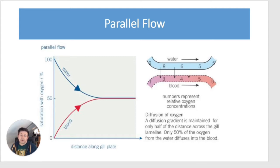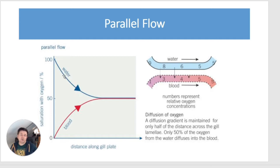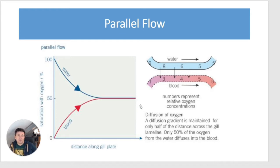Oxygen exchange from the water into the blood does not happen by parallel flow. In a parallel flow, water and blood move in the same direction. Looking at the graph — oxygen saturation versus distance along the gill plate — initially there is a large diffusion gradient because the blood is deoxygenated and the water is oxygen-rich. However, an equilibrium is reached, meaning only about 50% of the oxygen from the water diffuses into the blood, which is insufficient for an active fish.